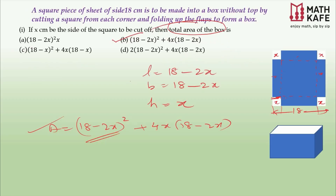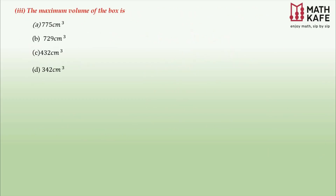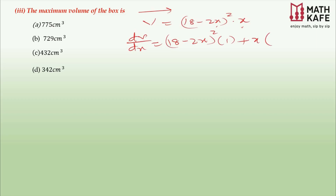The third question asks for the maximum volume of the box — here comes the main idea of maximization. You need to differentiate the volume and equate it to zero to find where the maximum occurs. We already have V = (18 − 2x)² × x. Differentiating using the product rule: first function times derivative of second plus second function times derivative of first, giving (18 − 2x)² × 1 + x × 2(18 − 2x) × (−2).